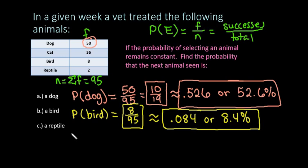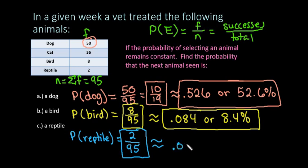And then the last one, the probability that we are selecting a reptile. So for this one a reptile was the least amount seen so we would have 2 out of 95. Again this can't be reduced, so if you leave your answer as a fraction you would leave it like this. Or you can convert it to a decimal by dividing 2 divided by 95, which gives us 0.021 or 2.1%.